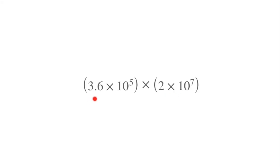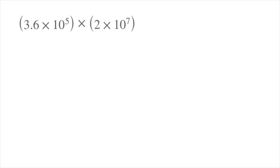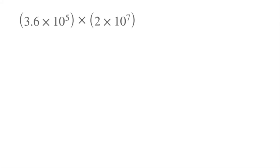Notice that both of these numbers in this multiplication are written in standard form. To begin with, the first thing we can do is get rid of these parentheses. Indeed, since everything is being multiplied here, we don't need these parentheses at all. So we can rewrite this as 3.6 times 10 to the power of 5 times 2 times 10 to the power of 7.